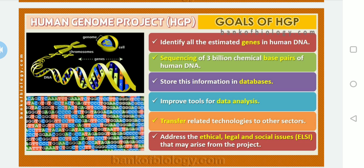The fifth goal is to transfer related technologies to other sectors such as industries - whatever knowledge we gain from the HGP can be transferred and utilized in other sectors. The last goal is to address the ethical, legal, and social issues - also known as ELSI - that may arise from the project.